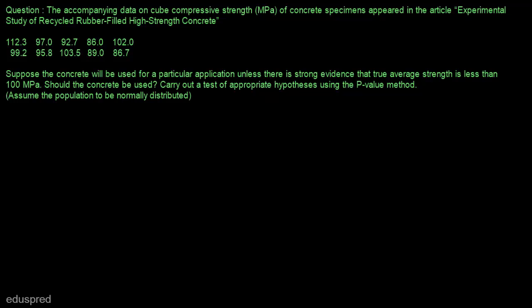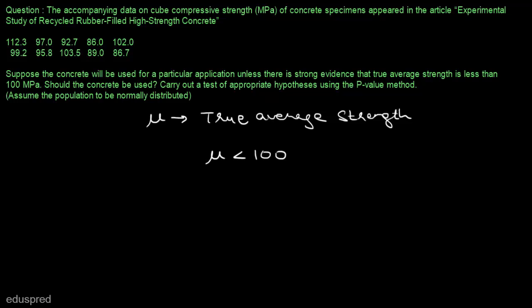First of all, let's say that mu is the true average strength. The claim that we have to test is that the true average strength is less than 100. The counterclaim is mu greater than or equal to 100. So these are the two claims that we have.